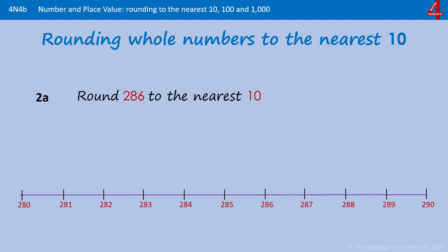Round 286 to the nearest 10. Pause the video and have a go. There's 286 on the line—the multiples of 10 on either side are 280 and 290. And you can see that 286 is nearer to 290. 286 rounded to the nearest 10 is 290.